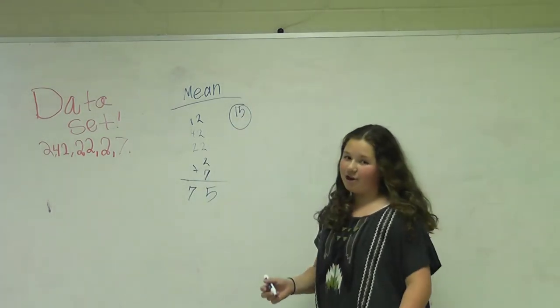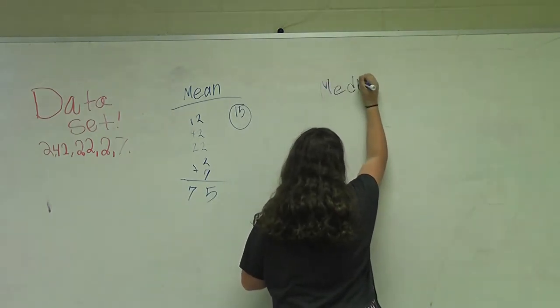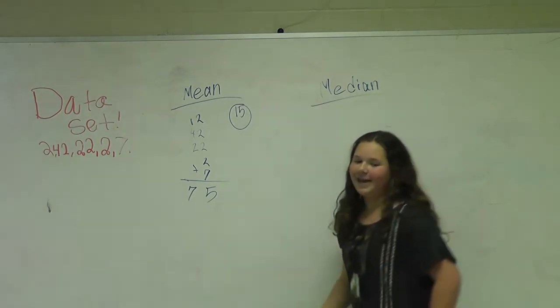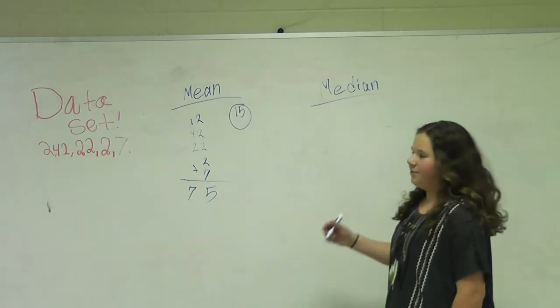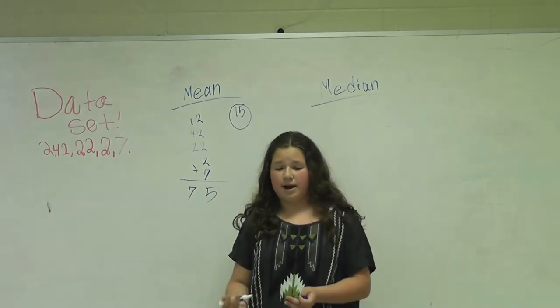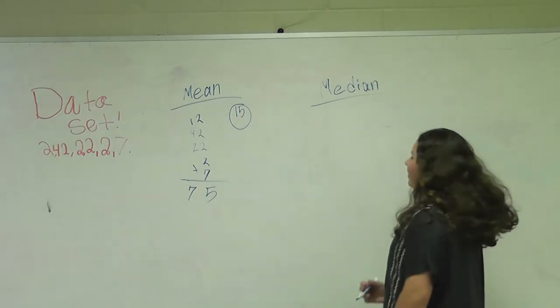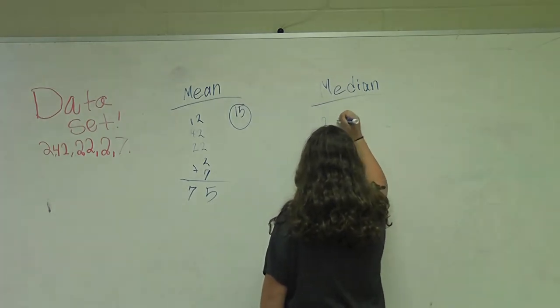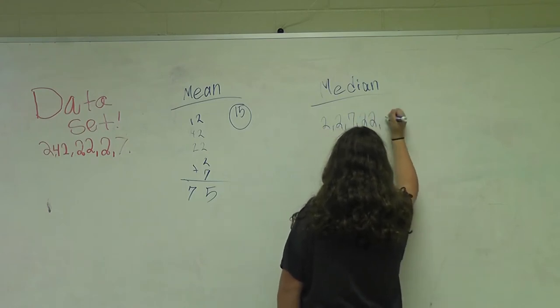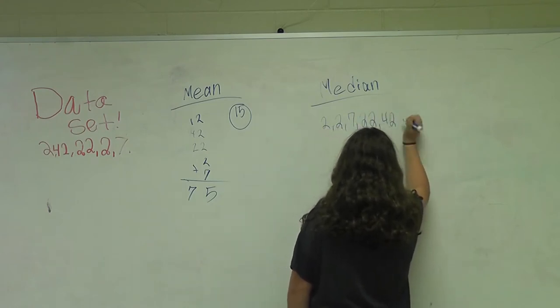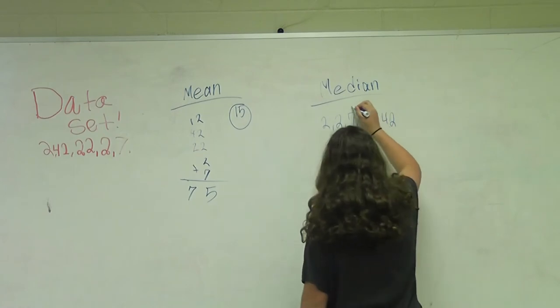So now I'll show you how to do median. So all you have to do for your median is you list your numbers in your data set, least to greatest or greatest to least. It doesn't really matter. So I'm just going to do least to greatest. So 2, 2, 7, 22, and 42. You'd pick the number in the middle, which is 7. And then that would be your median.